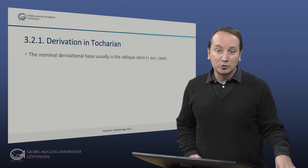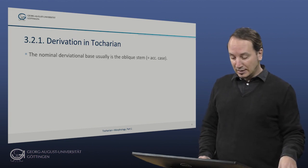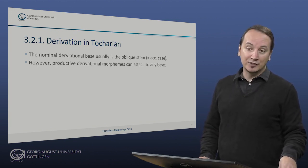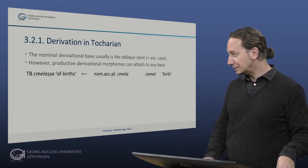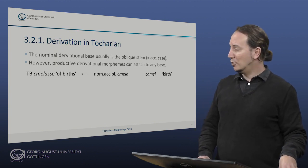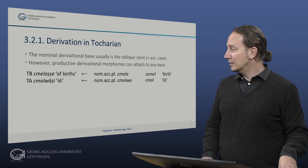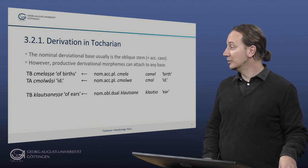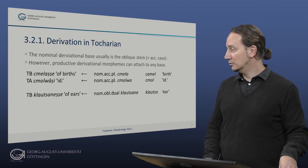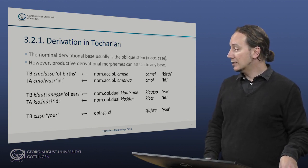The nominal derivational base is usually the oblique stem, which is also the accusative case. However, productive derivational morphemes can attach to any base, as seen in the following examples: 'dshmelasche' meaning 'of births', derived from the nominative-accusative plural 'dshmela'; 'klauzanjesche' meaning 'of ears', derived from the nominal oblique dual 'klauzanje' from 'klauzo' meaning ear; and its Tocharian A equivalent.